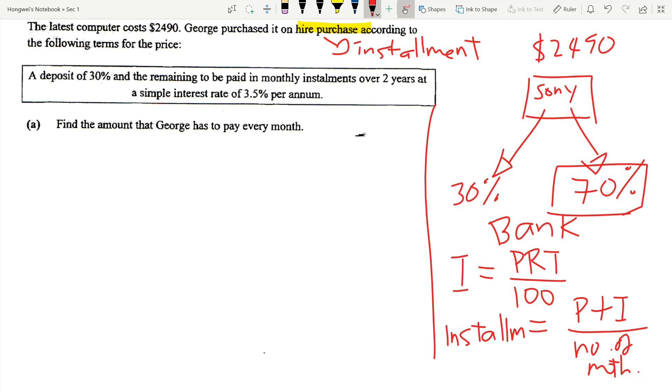...is you have to write down the acronym, the alphabet that represents it. So two years represents the time. This represents the rate. Now what do you need? You need your P. So today I pay 30%, I can bring this laptop home. How much did I borrow from the bank?